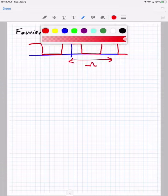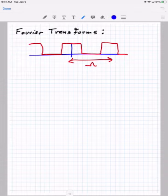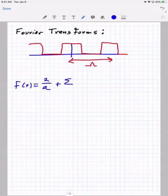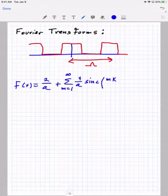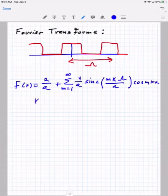The solution to a periodic function is a Fourier series. So f of x was equal to two over a — that's just the average of the function — and then there is an infinite series with integer indexes. We're looking at coefficients four over a, and then we get the sinc function with integer argument. The k value is 2π over the repeat, and then we have cosine of m·k·x, where k is the fundamental, 2π over the repeat.